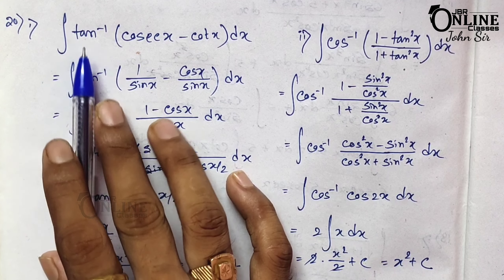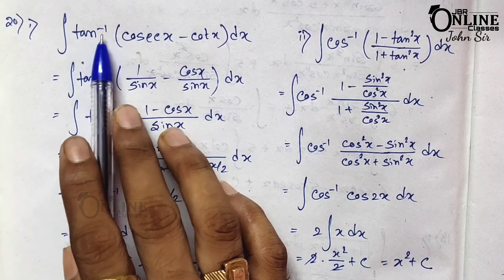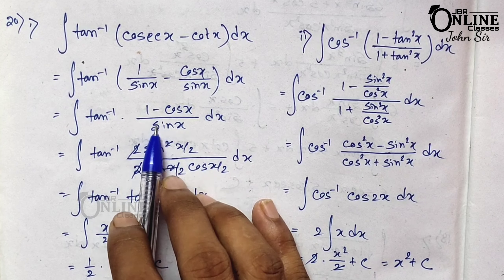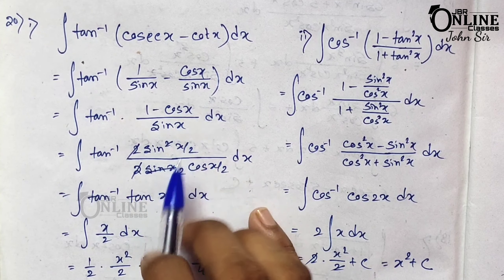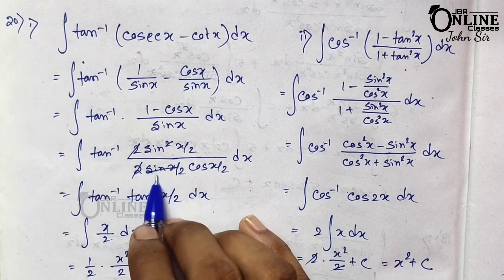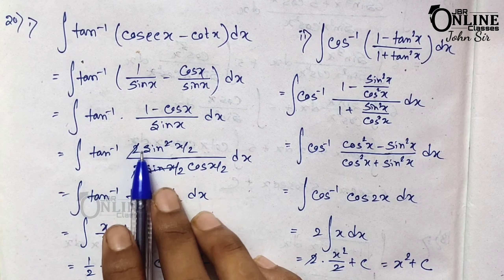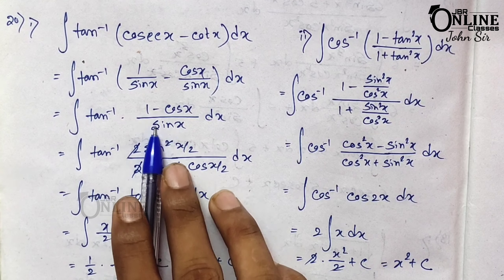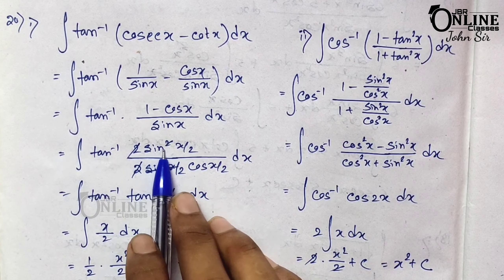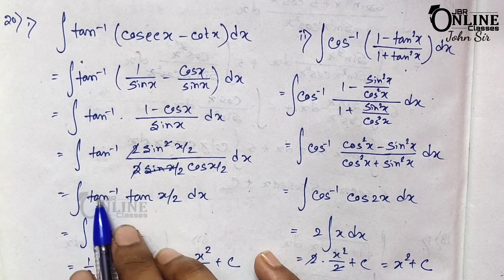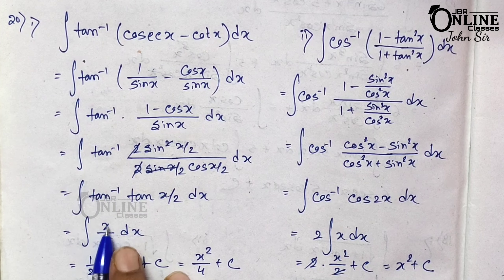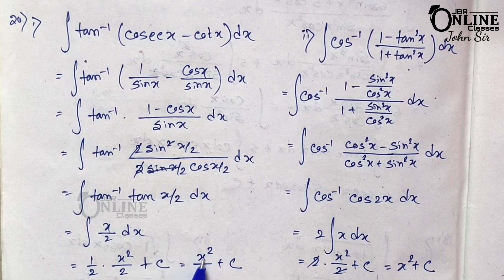Sum 21: integration of tan⁻¹(cosec x − cot x) dx. cosec x = 1/sin x, cot x = cos x/sin x, so (1 − cos x)/sin x. Using 1 − cos x = 2sin²(x/2) and sin x = 2sin(x/2)cos(x/2), these simplify to sin(x/2)/cos(x/2) = tan(x/2). So tan⁻¹(tan(x/2)) = x/2. Integrating (x/2)dx: (1/2)·(x²/2) = x²/4 + c.